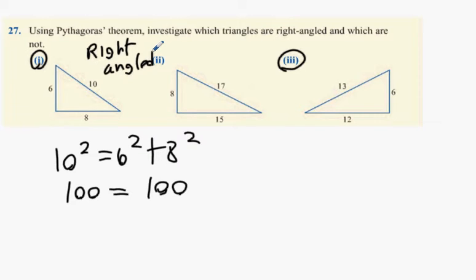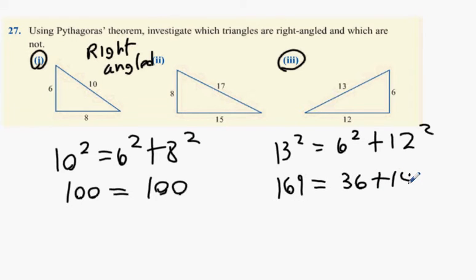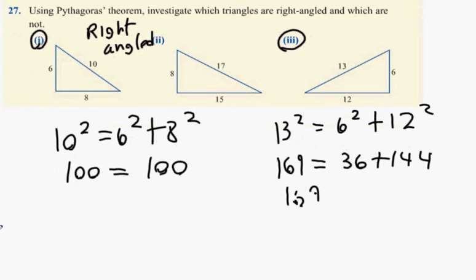If I was to do part 3 as an example, 13 squared equals 6 squared plus 12 squared. 169 is equal to 36 plus 144.